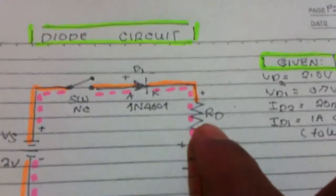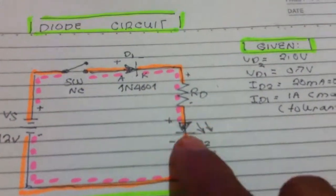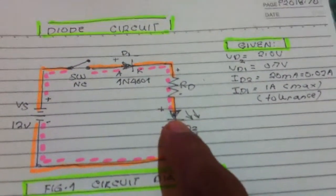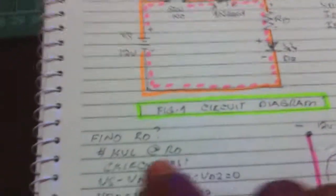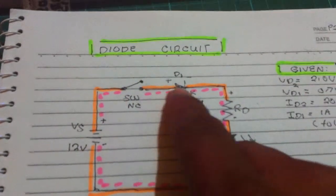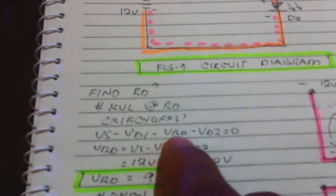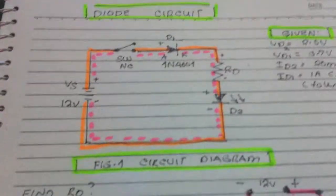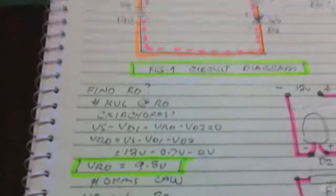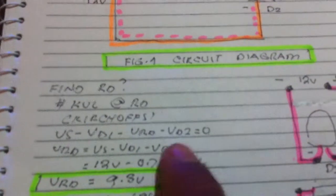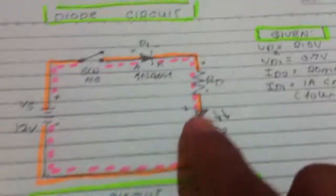Let us find Rd, the resistor needed to protect the LED from burning. Using Kirchhoff's Voltage Law: voltage supply minus voltage drop at D1, minus voltage drop at Rd, minus voltage drop at D2 equals zero. Substituting: 12 volts minus 0.7 volts minus Vrd minus 2 volts equals zero, giving us 9.3 volts as the voltage drop across Rd.